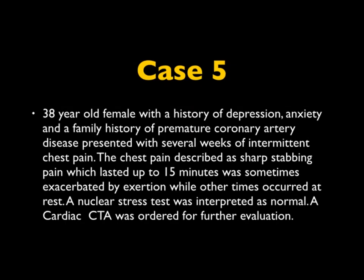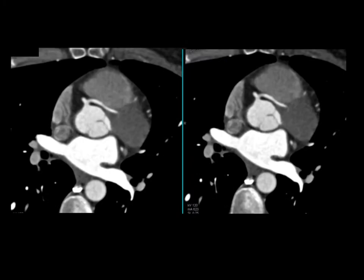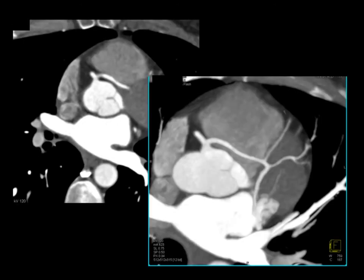Let's look at another case. The patient has a complex history of depression and anxiety, had chest pain, stress test was negative, and the patient was insistent on a coronary CTA, which was obtained. Looking at the images, you see the patient's right coronary, and now you see it bifurcating into two vessels. Looking more closely, what you really see is that the patient's left main coronary artery is coming off the right coronary, just beyond its origin.